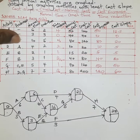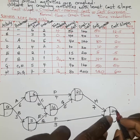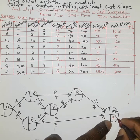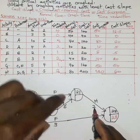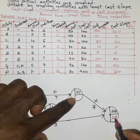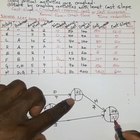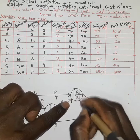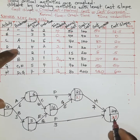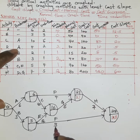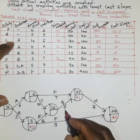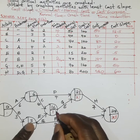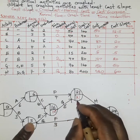We now perform the backward pass, working backwards. The ending time should match the latest finishing time. The backward pass involves subtracting the duration from each node going back. For example, 28 minus 7 gives 21; 28 minus 3 gives 25; and 21 minus 5 gives 16.